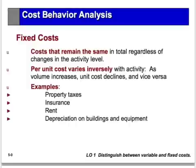Contrast that with a fixed cost. A fixed cost does not change in total with changes in the level of activity — it stays the same. Property taxes, insurance, and rent are examples. It doesn't matter how much the sales are; the rent is going to be the same, the taxes will be the same, the insurance will be the same. But on a per unit basis, the more you produce, the less the per unit cost — it will decline.